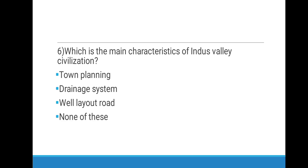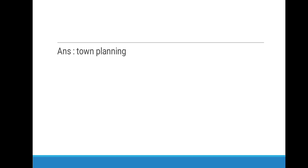Which is the main characteristic of Indus Valley Civilization? Options are Town Planning, Drainage System, Well Layout Road, or None of these. The answer is Town Planning.